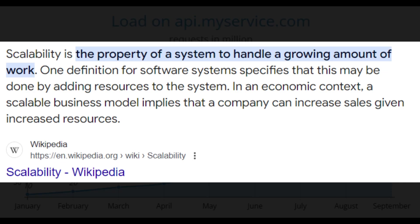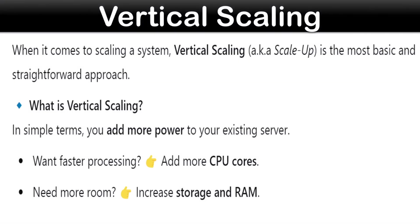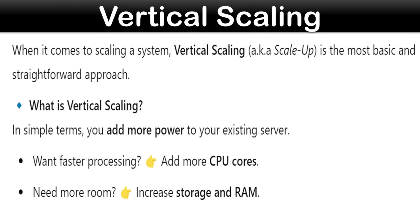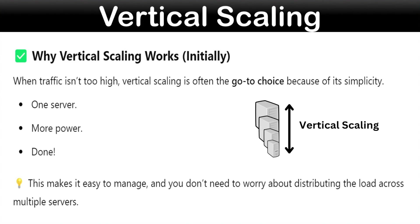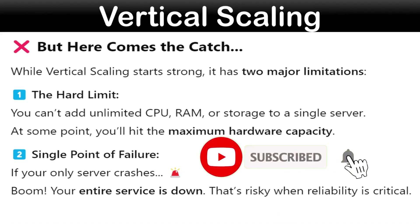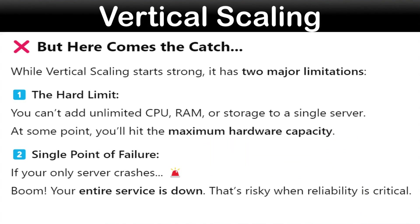Let us start with the most basic one, which is vertical scaling, also known as scale up. In this, we add more power — like increasing processing speed by adding more CPU cores, or adding more storage and RAM to the existing server. It's like upgrading your old laptop instead of buying a new one. When traffic is not very high, vertical scaling is a great option and its simplicity is its main advantage. But unfortunately it comes with limitations — vertical scaling has a hard limit; it is impossible to add unlimited CPU and memory to a single server, so after some point you may not be able to scale it further.